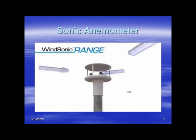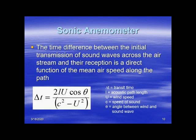That's an explanation of how the sonic anemometer works, as well as an advertisement for Gill. Here's the math: the time difference between the initial transmission across the air and its reception is a function of air speed. Getting different times gives you different wind speeds, and from that you can triangulate.